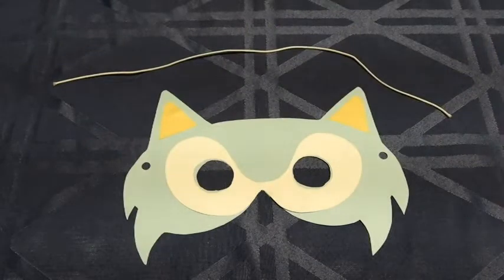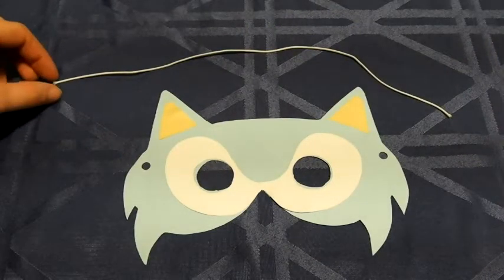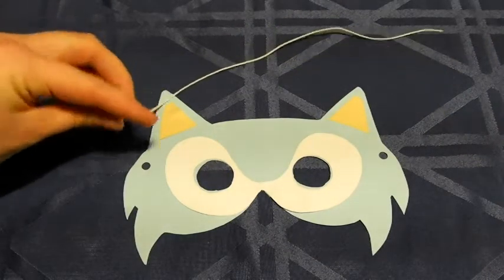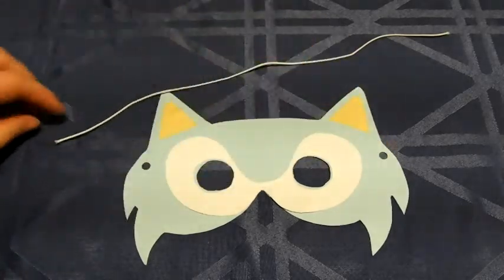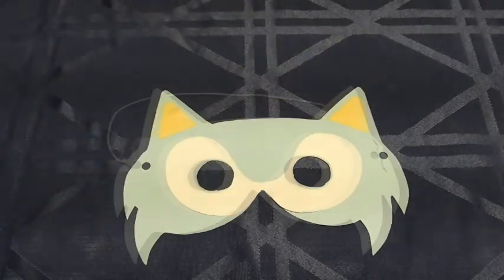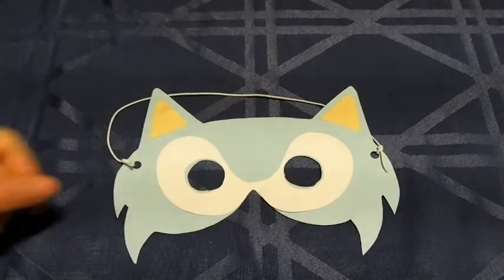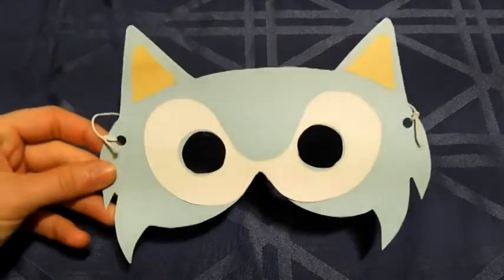Once you're finished gluing down the facial features, the next step is to tie on some elastic string into the two holes on either side of your mask. Once your band is tied firmly in place, your mask is ready to wear.